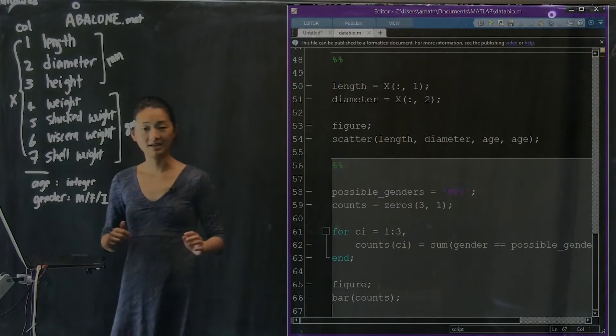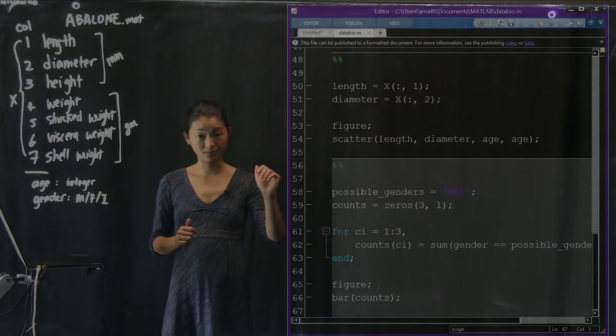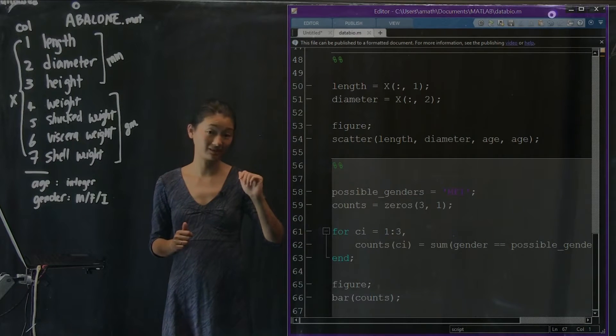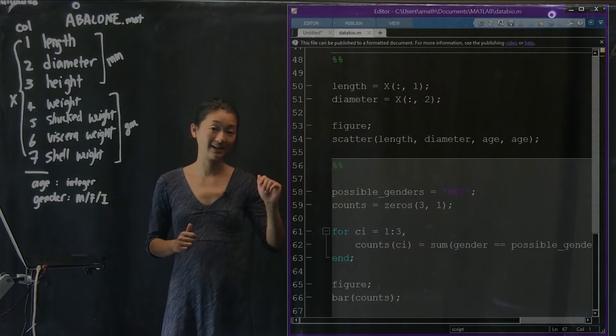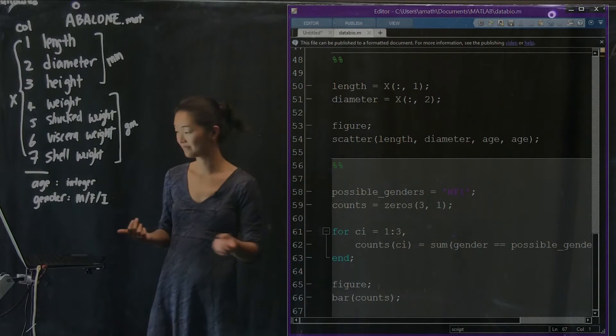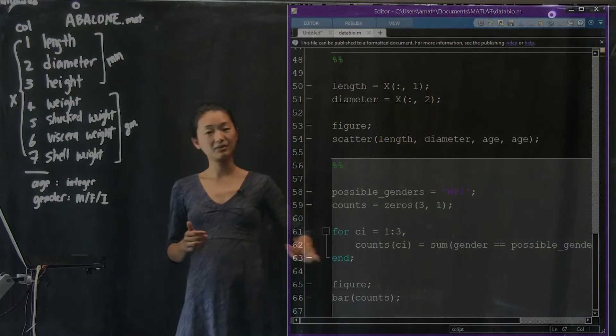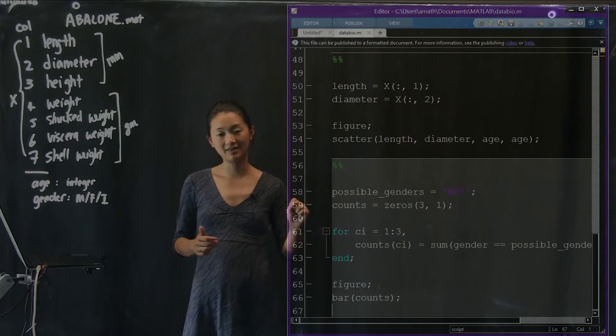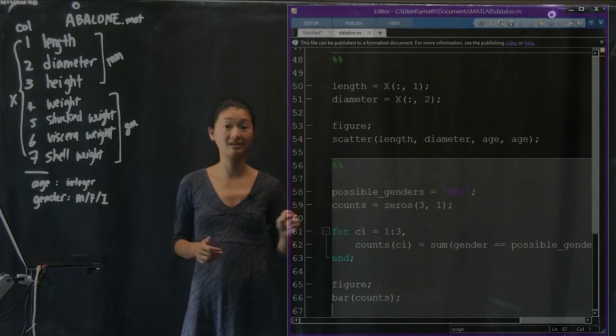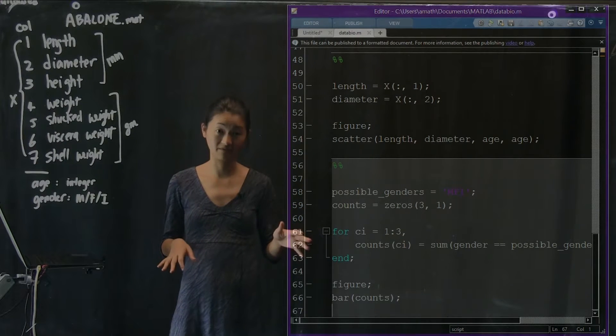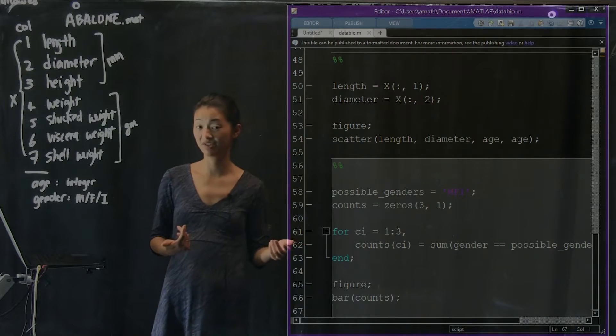So, what we need to do is get access to that tick label, X tick label property, and set it to be something else. So, in order to get a handle on that particular X tick property, and there are many, many, many of them. I'm just going to show you one of them and how to change it.